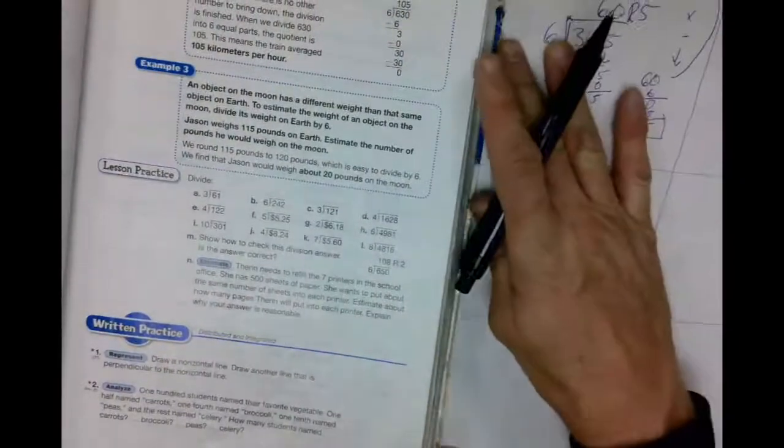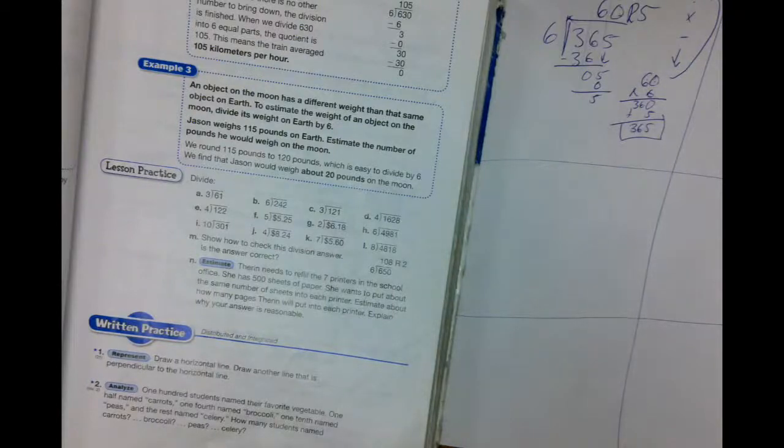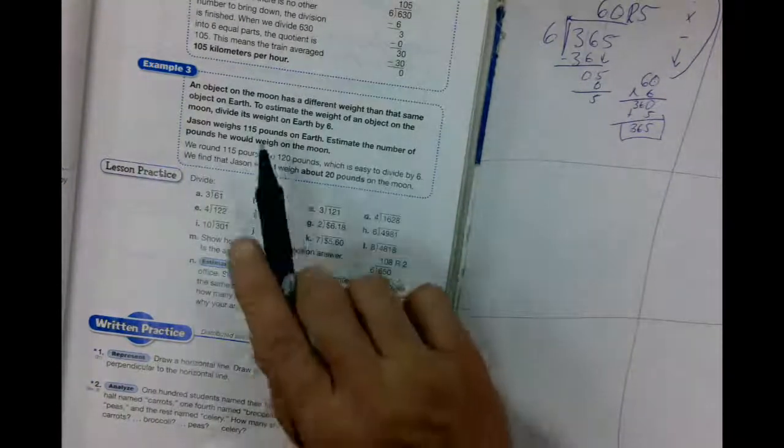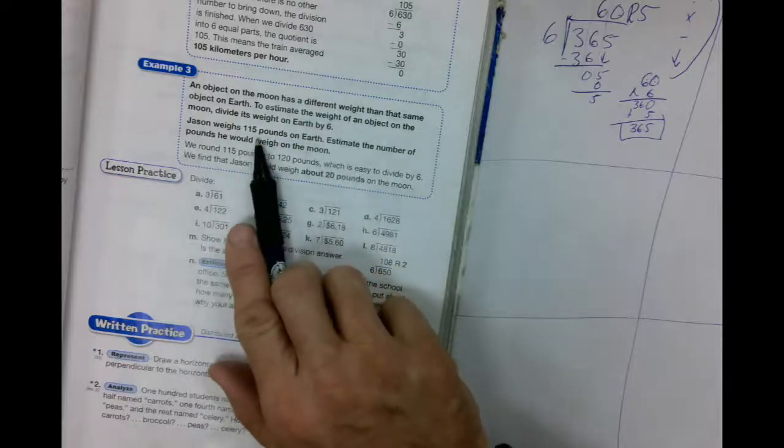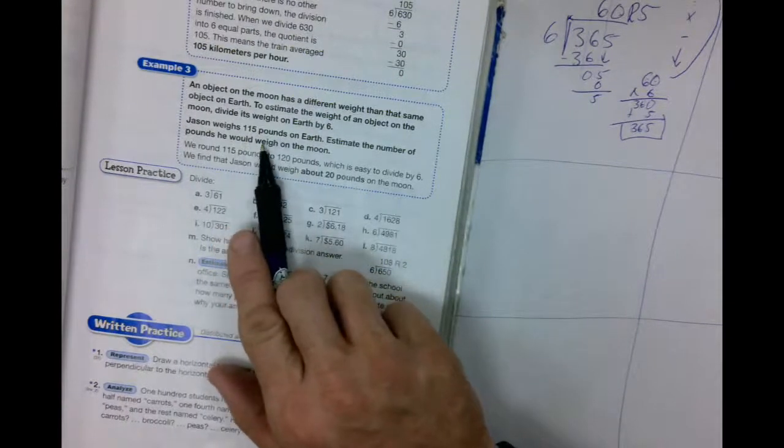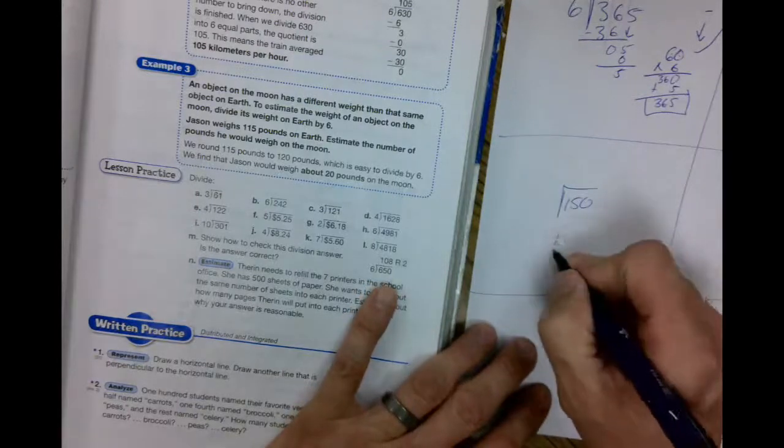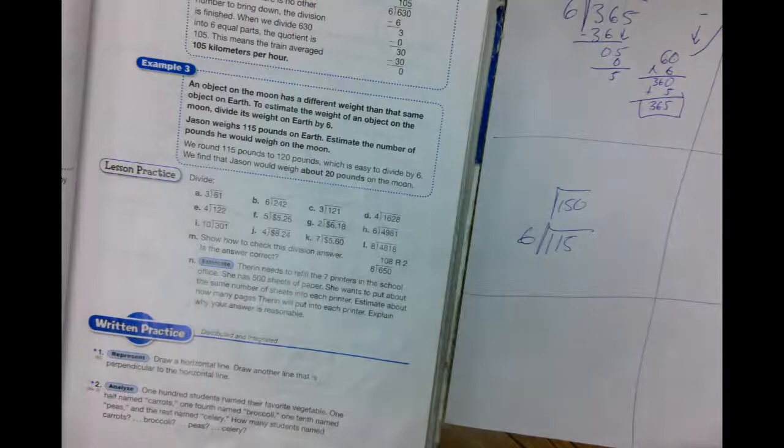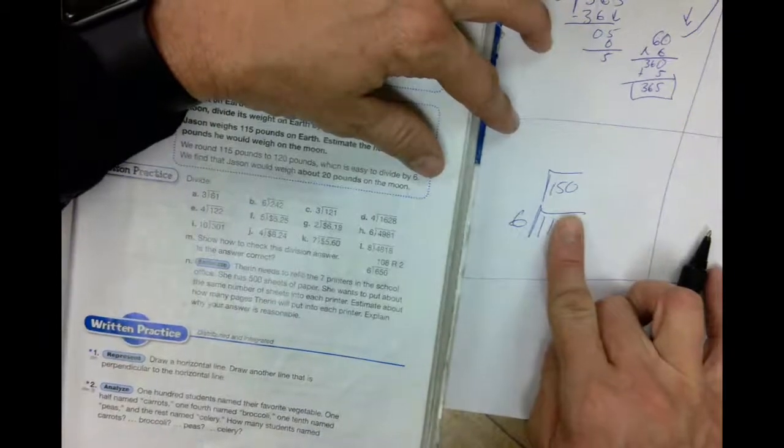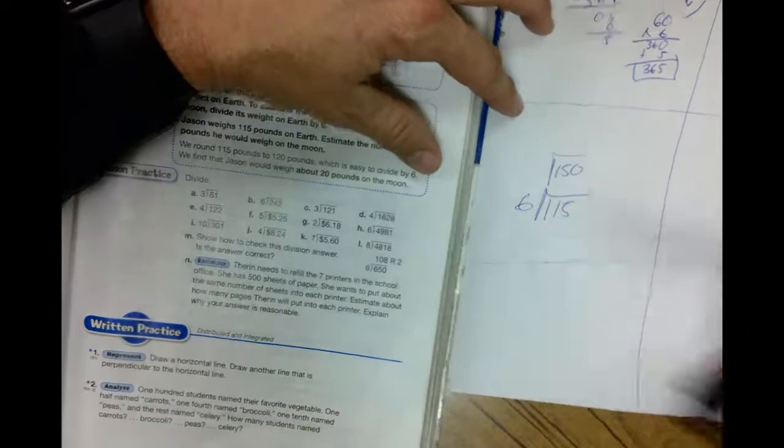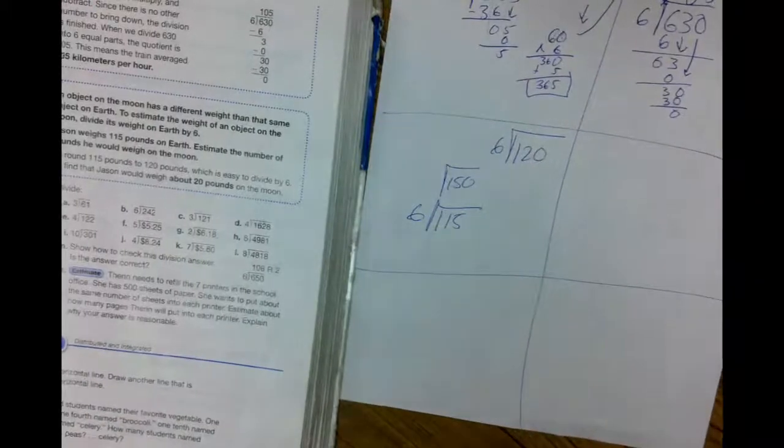Example number three. An object on the moon has a different weight than the same object on earth. We have already learned that in reading because there's less gravity on the moon. To estimate the weight of an object on the moon, divide the weight on earth by six. So Jason weighs 115 pounds. Estimate the number of pounds he would weigh on the moon. So first of all, let's go ahead and divide this. 115 divided by six. And now we're going to go and try to find compatible numbers. I like to do it like this. What number close to 11 is divisible by six? And that's 12. So we're going to round this one to 120 divided by six. That's going to make this problem way easier. Estimating always makes it easier.